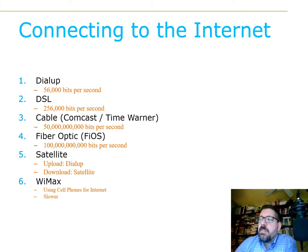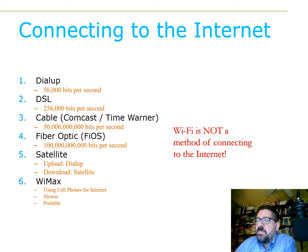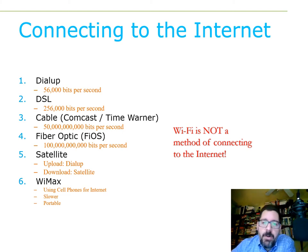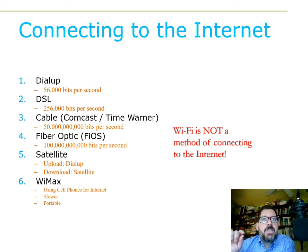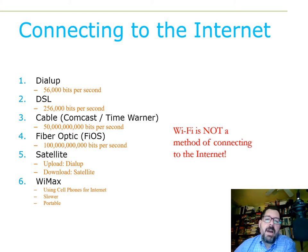One thing to remember: Wi-Fi is not a method of connecting to the internet. Wi-Fi is a method of connecting to a local area network. So if asked on a test what are ways to connect to the internet, the answers are dial-up, DSL, cable, fiber, satellite, and WiMAX. Wi-Fi is a way to connect to a local area network, which we'll talk about shortly.